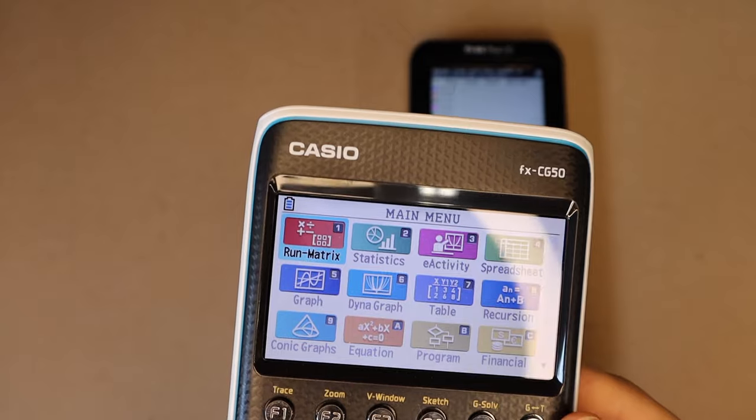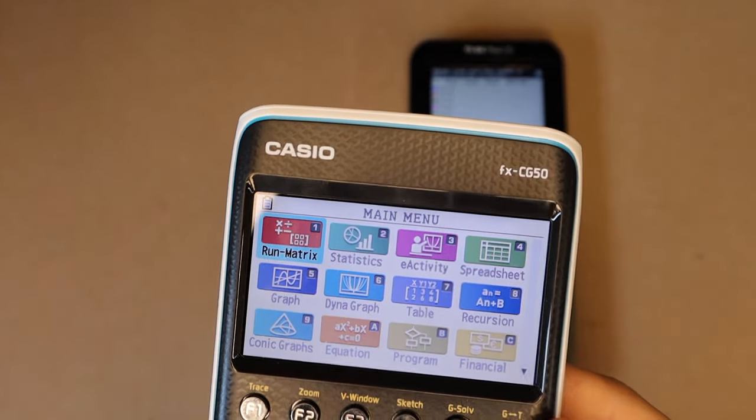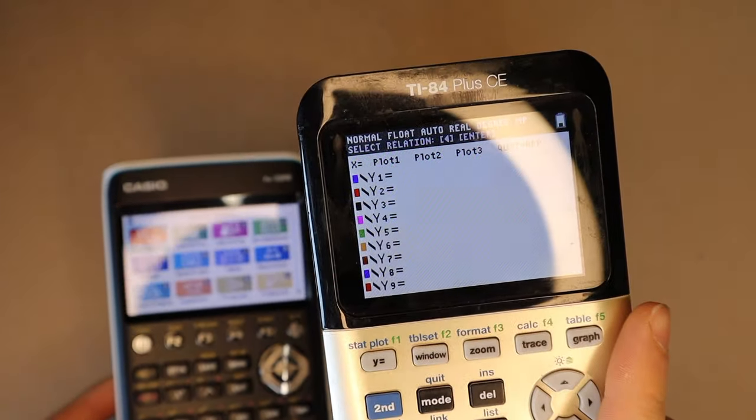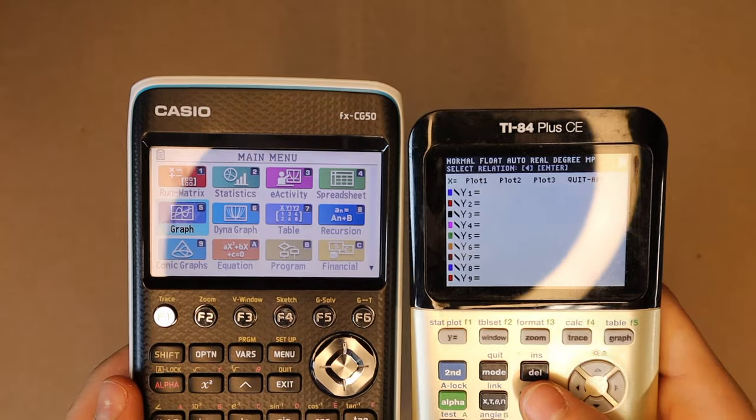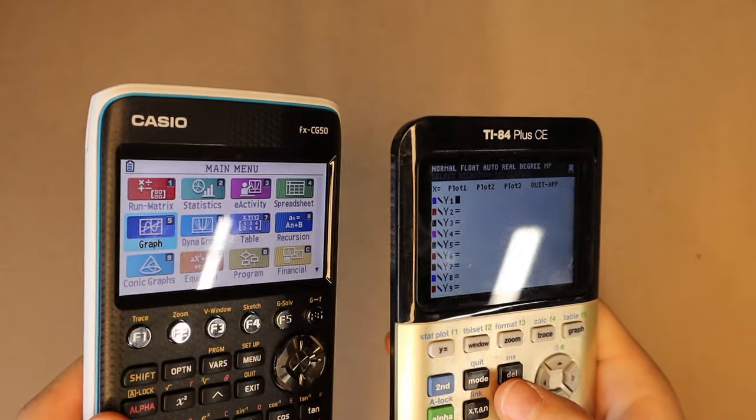So both calculators come with a relatively high-resolution color screen, and they are similarly sized, although you can see the screen on the Casio is a bit taller and a bit wider.